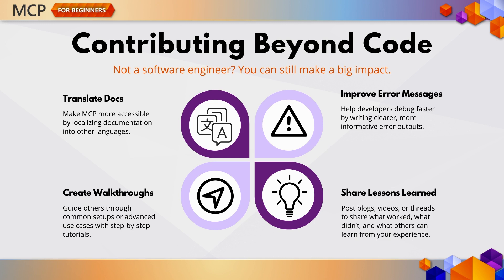Creating sample apps or improving error messages helps the entire community grow. Let's say you've got a great idea for a tool — whether it fetches thought quotes, translates text, or gets the weather forecast. You can create a reusable MCP tool, package it for others, and then publish it to a package registry, just as you would with any other open source library.